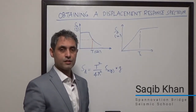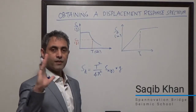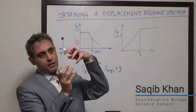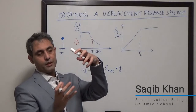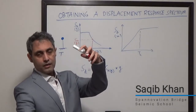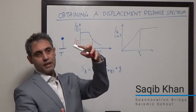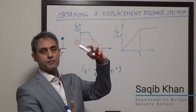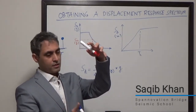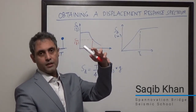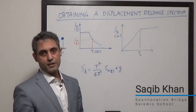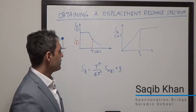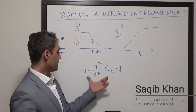You can imagine a structure which is very, very flexible — what will happen is the mass at the top will stay put while the ground just moves underneath it. So the maximum relative displacement it will ever experience is just going to be equal to the displacement of the ground, and the ground obviously is not going to move in an unbounded fashion.